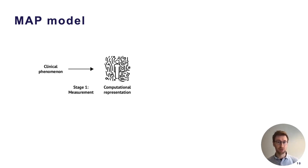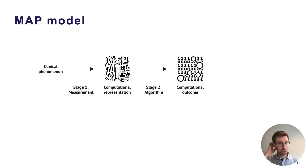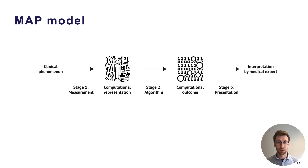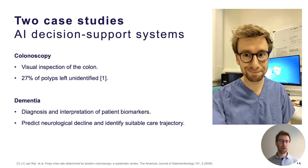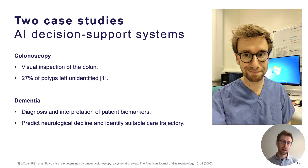The MAP model consists of three stages. The first stage is the measurement stage, where real-world phenomena is described and recorded by means of one or more sets of data. This computational representation is then transformed into a useful outcome signal, which is eventually presented to the user. We evaluate the challenges that emerge when applying an AI decision support system in real clinical settings through two use cases: the first one is colonoscopy, and the second one is dementia.